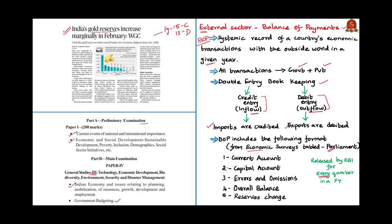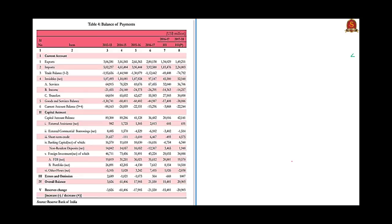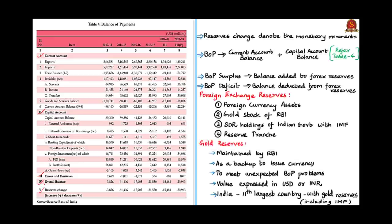Let's see the table of balance of payments presented in the economic survey of 2017-18. The subheads include current account, capital account, errors and omissions, overall balance and reserves change. Let us now focus on reserves change, which is relevant to our topic. The reserve changes in general denote the monetary movements in and out of India — they are the foreign exchange reserves.